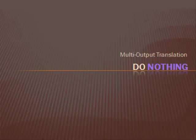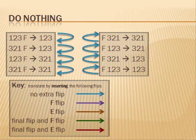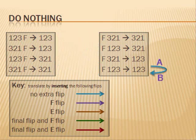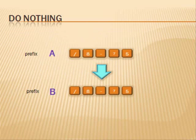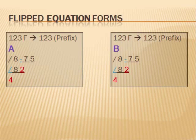Technically, this is a form of multi-output translation. This is the easiest translation — you don't do anything. It translates from any form to the same form it was. Divide eight subtract seven five translates to divide eight subtract seven five. Since the result of four is the same for both forms when calculated, the translation was a success.